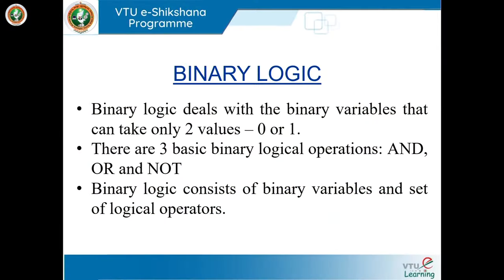To understand the digital system, we first need to understand binary logic. In binary logic, we have only two possible values: 0 and 1. When we deal with the decimal system, we have numbers from 0 to 9 — ten possible values. In the binary system, 'binary' means 2, so we have only two possible values: 0 and 1.